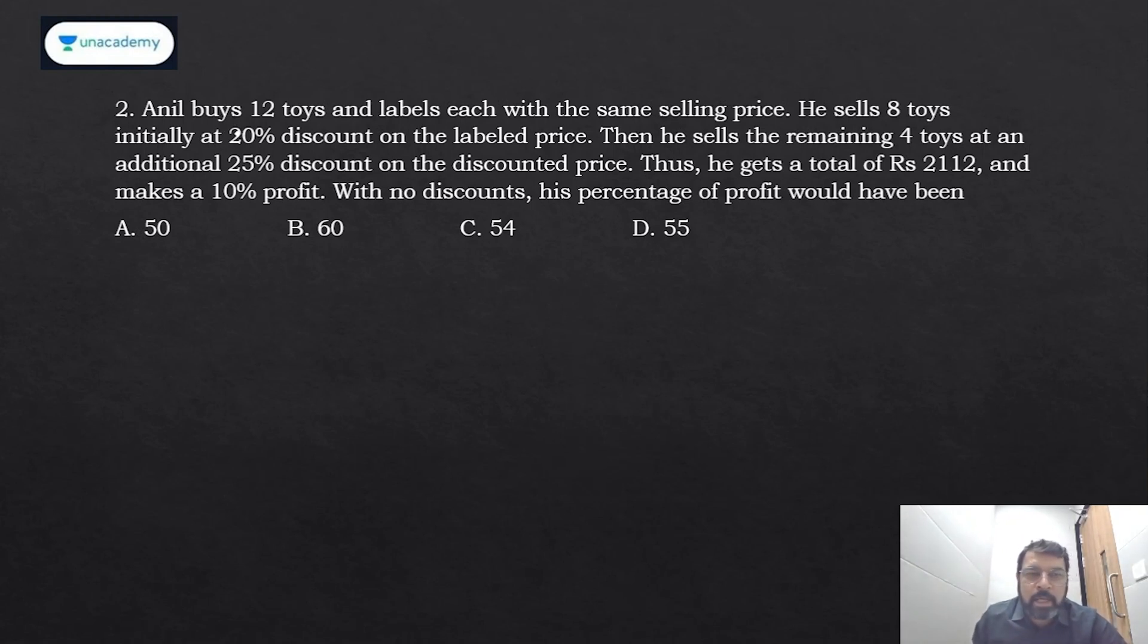The idea or the short trick here is actually concept-based. Anil buys 12 toys and labels each with the same selling price. He sells 8 toys initially at 20% discount on the labeled price, then he sells the remaining 4 toys at an additional 25% discount on the discounted price. Thus he gets a total of Rs 2112 and makes a 10% profit. With no discounts, his percentage profit would have been?